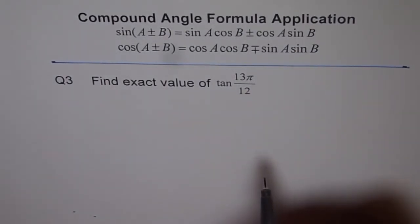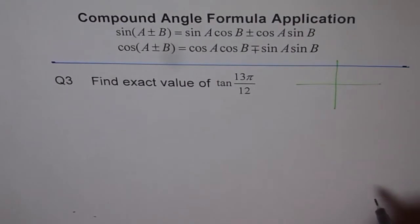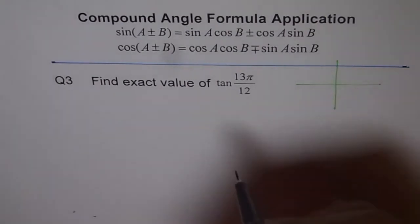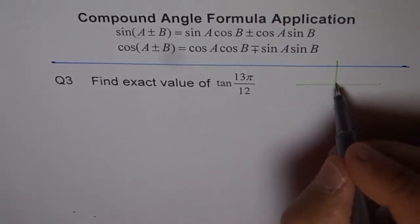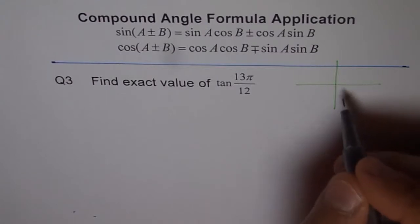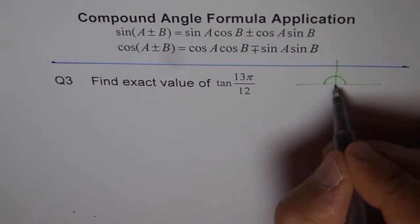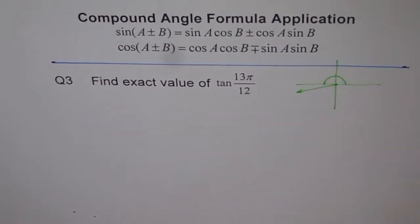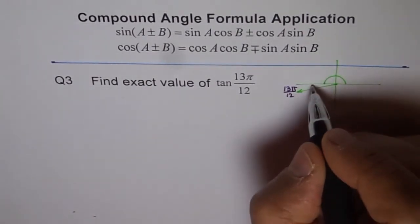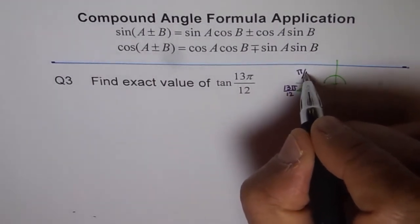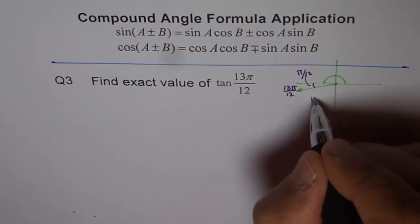What is 13π by 12? Let's try to figure that out. It's always good to write them in terms of the related acute angle. Pi by 12 means π is divided into 12 equal parts, so each part is one-twelfth. There are 12 equal parts and the 13th part lands here — so 13π over 12 lands in quadrant 3, with π over 12 as the remainder.